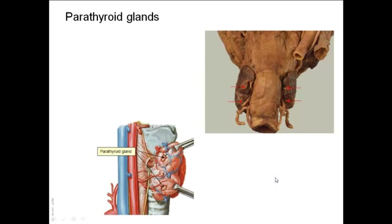As for the parathyroid glands, there are two on each side — as seen in this photograph and diagram — superior and inferior parathyroid. They are yellow-brown in color, about the size of a small pea, and secrete parathormone, which mobilizes bone calcium and increases gut and kidney calcium absorption. They are located posterior to the thyroid gland, within the pretracheal fascia but outside the capsule of the thyroid gland.